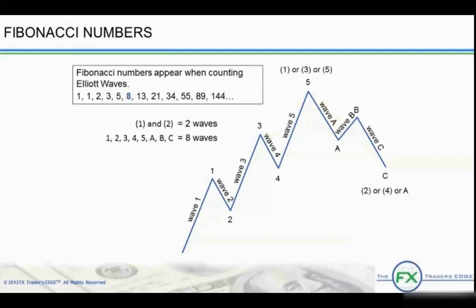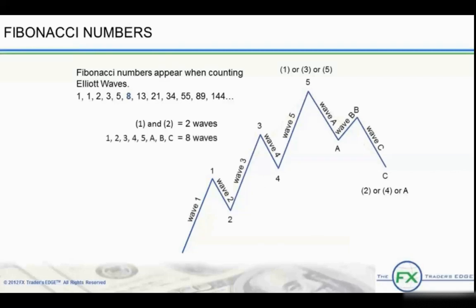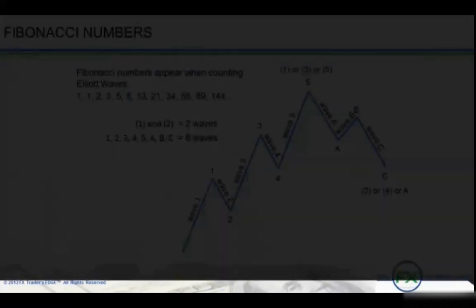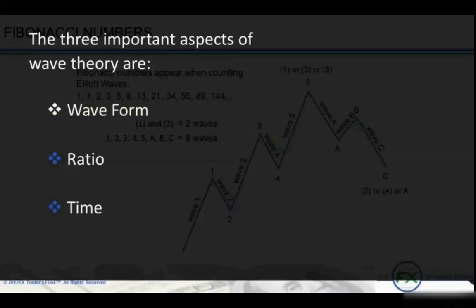Specifically, waves 1 and 2 of the daily chart will subdivide into waves of a lesser degree which can be seen on the hourly chart. It is important to mention that Elliott observed in his work that patterns in the market are repetitive in form, but not necessarily in time or amplitude. This brings up a good point, which is that there are three important aspects of wave theory: pattern or form, ratio, and time. Pattern refers to the wave sequence completing a cycle in any time frame and is considered the most important element of the three in wave analysis. However, we will look very closely at ratio analysis and introduce time analysis as well.